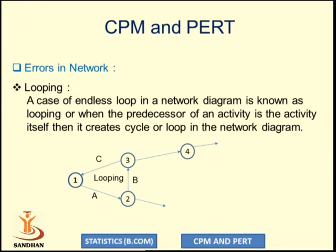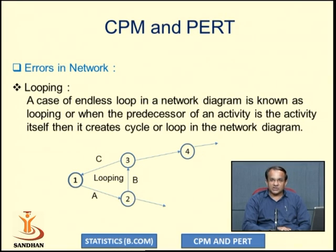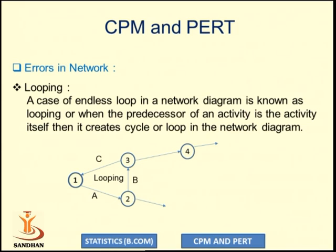While drawing a network diagram, two types of errors can occur. The first error is looping. Looping means a case of an endless loop in a network diagram, or when the predecessor of an activity is the activity itself, creating a cycle or loop. When looping occurs, the project cannot be completed, so looping is considered an error. As seen in the graph, activities A, B, and C form a loop where each activity is the predecessor of itself. To remove looping, we use a dummy activity.